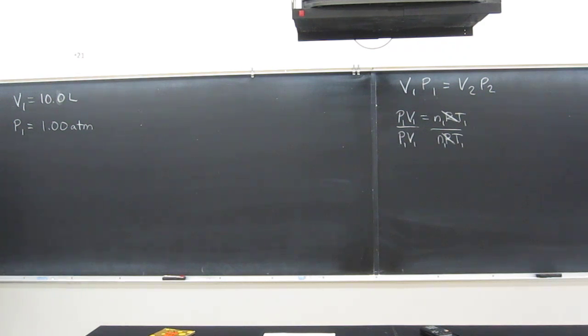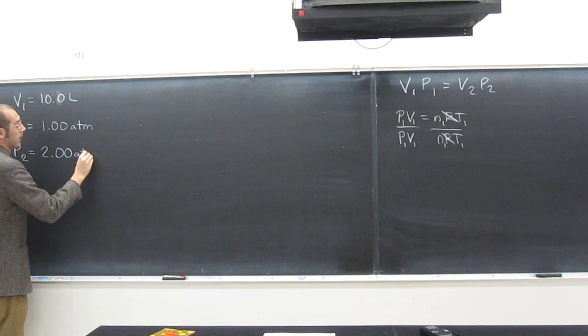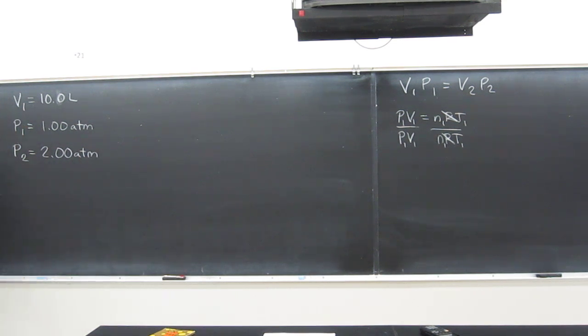And P-1 is 1.00 atm. So it asks if you double the pressure to 2 atm. So P-2 is going to be 2.00 atm. What is the new volume?